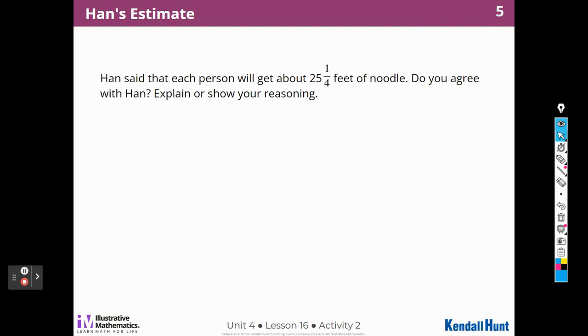Han said that each person will get about 25 and one fourth feet of noodle. Do you agree with Han? Explain or show your reasoning. Well, it sounds like Han went ahead and did all the work instead of estimating. Well, no, he estimated. It says that he estimated, didn't he? So what did he do? Well, we know that when we estimated 10,000, that 25 was right. And we know it's got to be more than 10,000 for each person. I mean, more than 25 feet for each person.